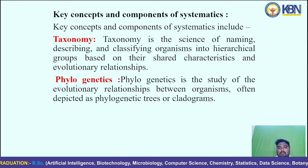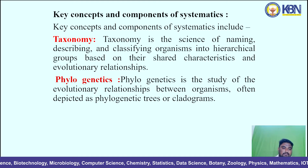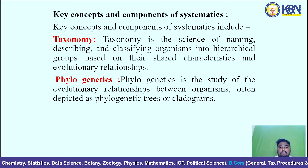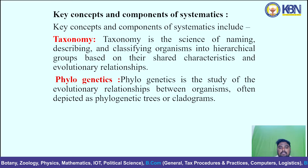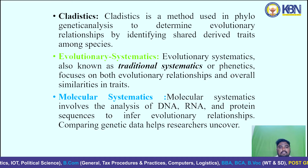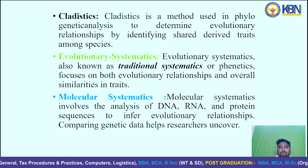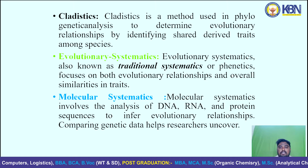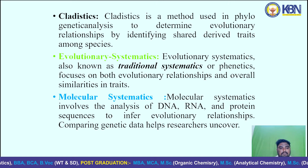The next component is phylogenetics — the study of evolutionary relationships between organisms, often depicted as phylogenetic trees or cladograms. Cladistics is the method used in phylogenetic analysis to determine evolutionary relationships by identifying shared derivative traits among species.